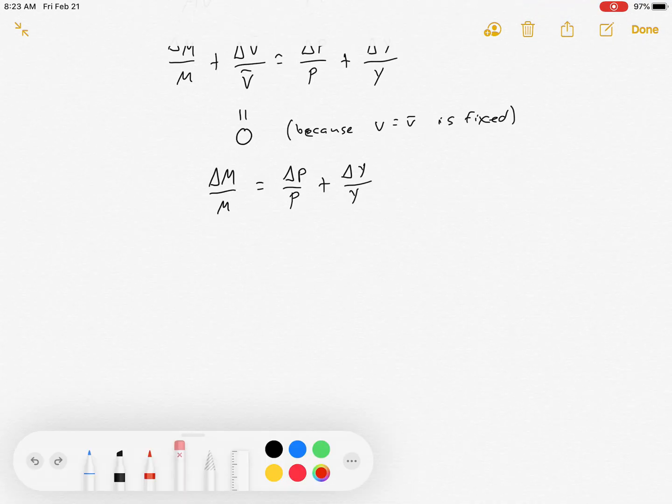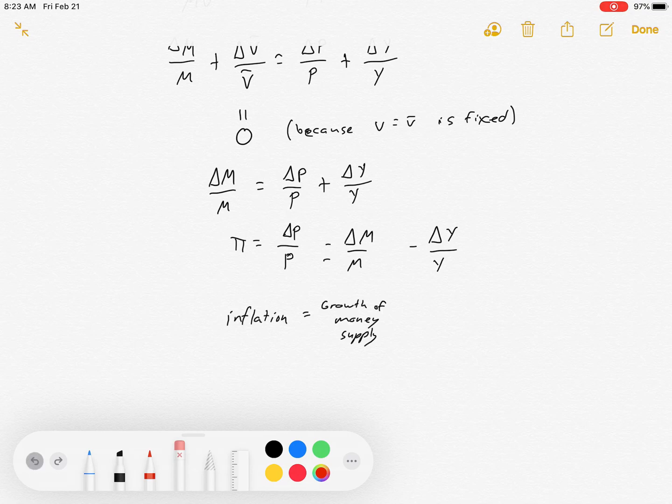So let's take this and solve for inflation real quick. Inflation, the growth rate in prices, is equal to the growth rate of the money supply minus the growth rate of real GDP. And this idea that inflation equals the growth of the money supply minus the growth of real GDP is the central focus of this little model that we're using.